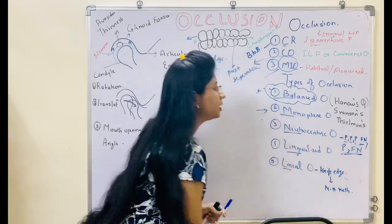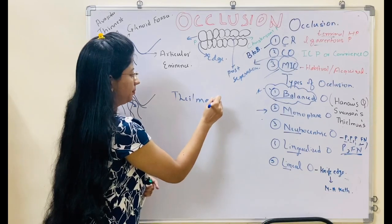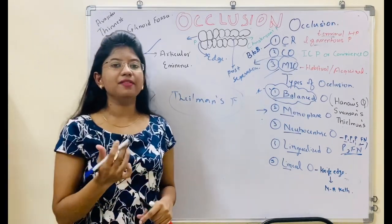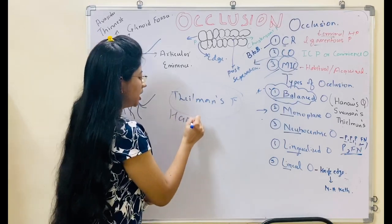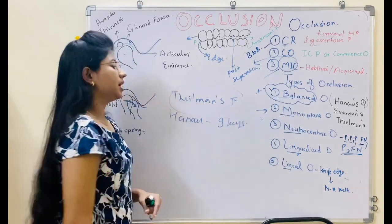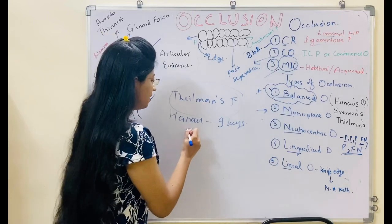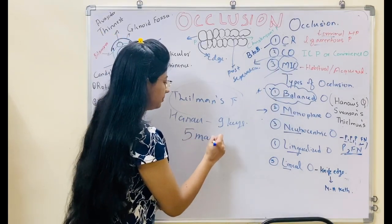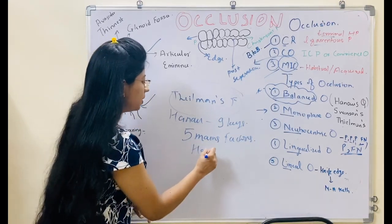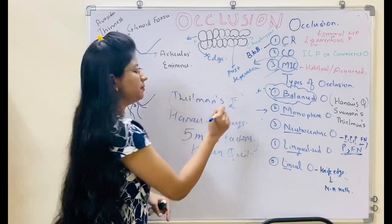For balanced occlusion, we will study Thilman's formula. Earlier, Hanau gave nine keys, then he eliminated four, leaving five main factors. These five main factors of Hanau's Quint are used in Thilman's formula.